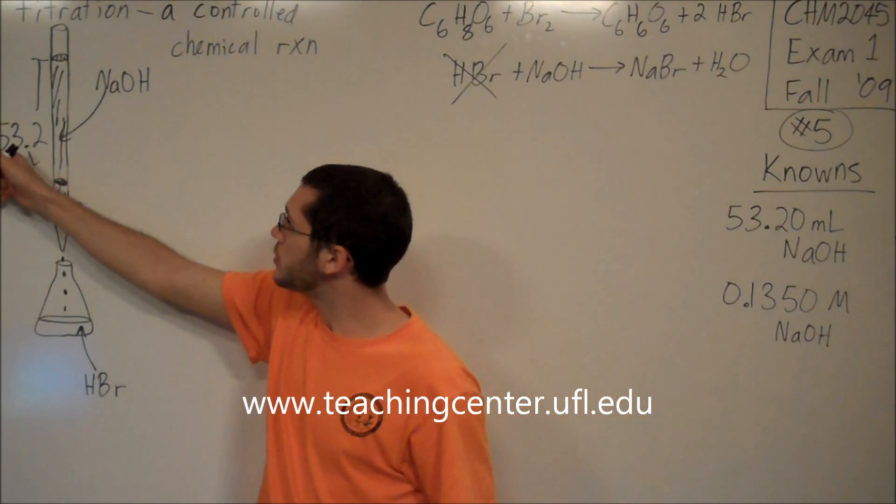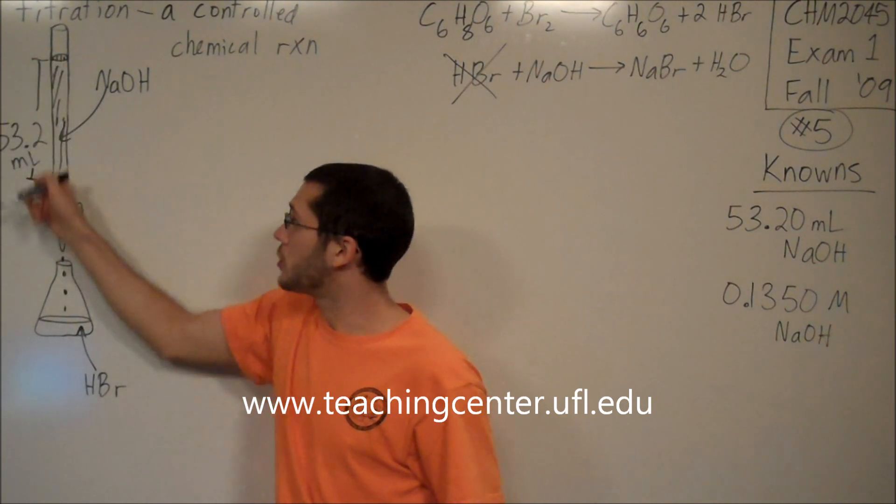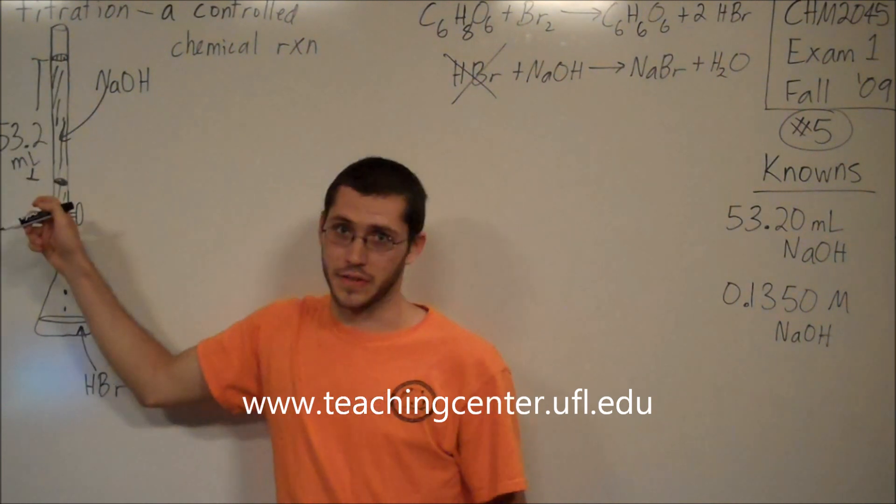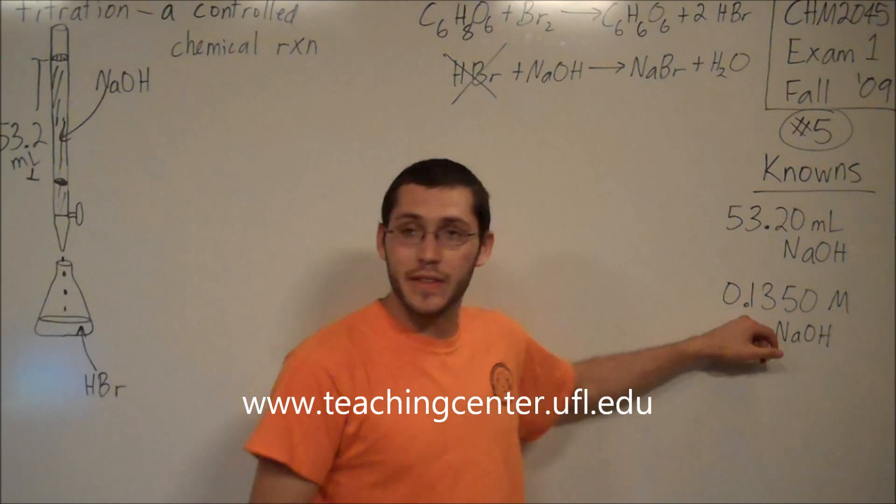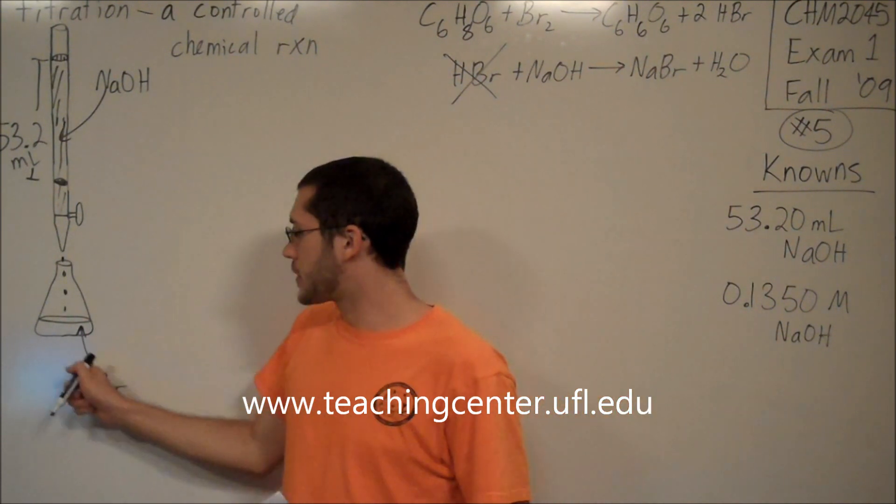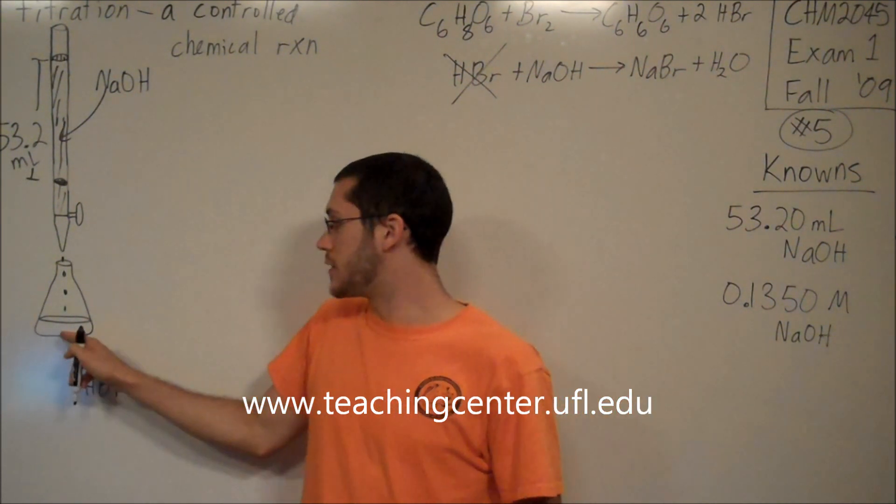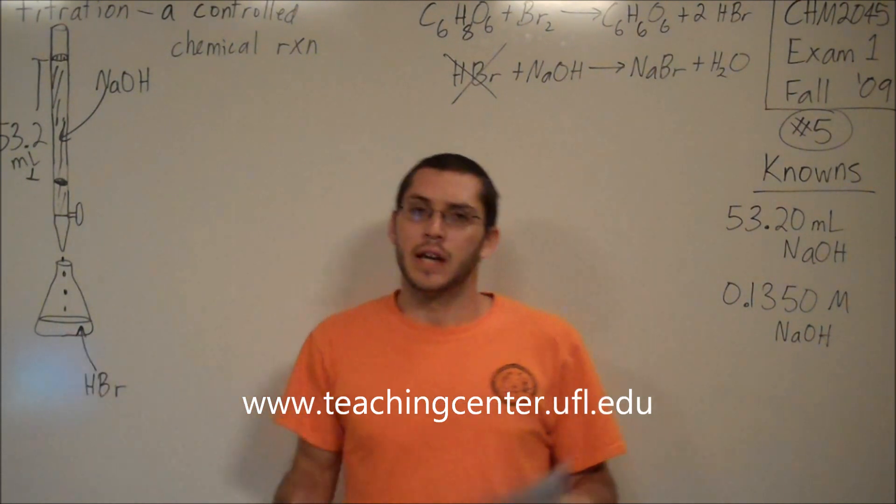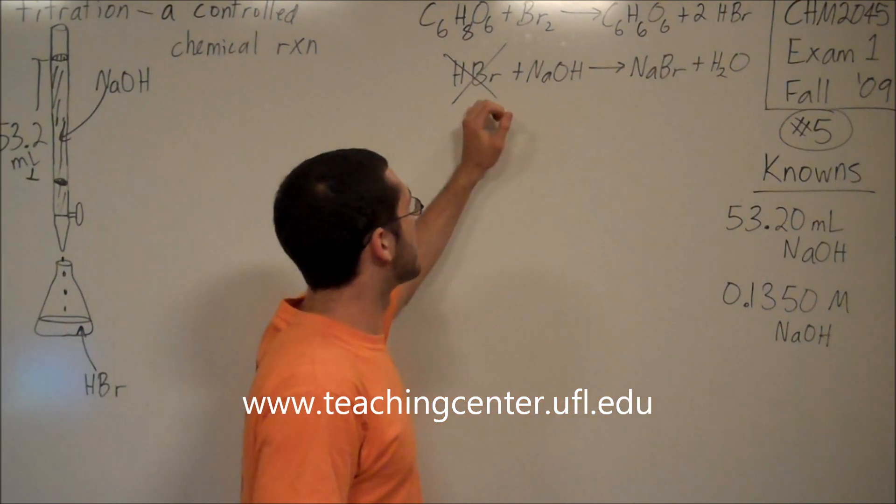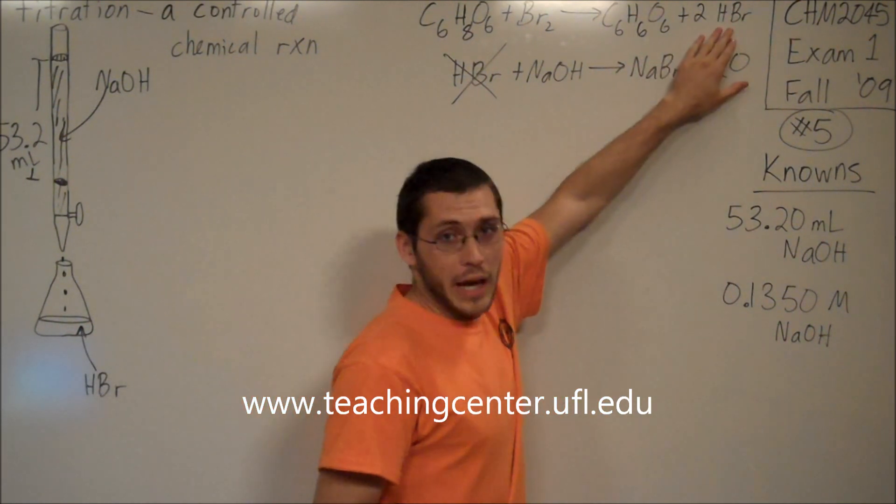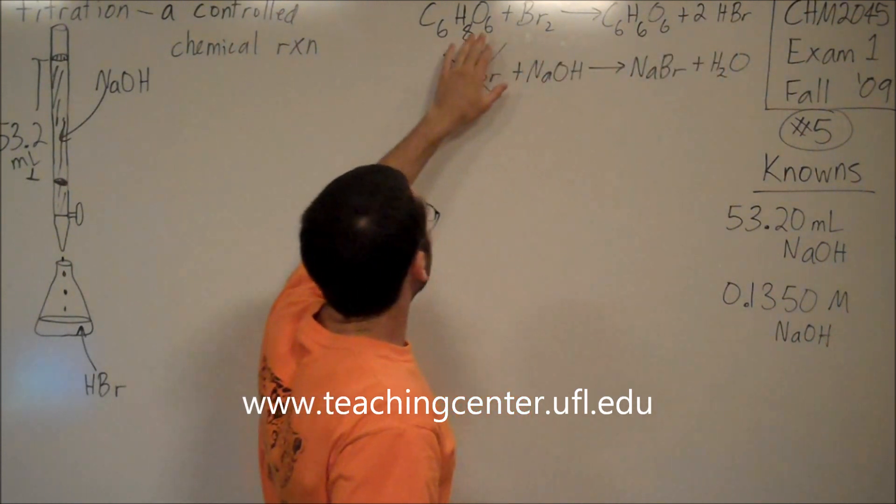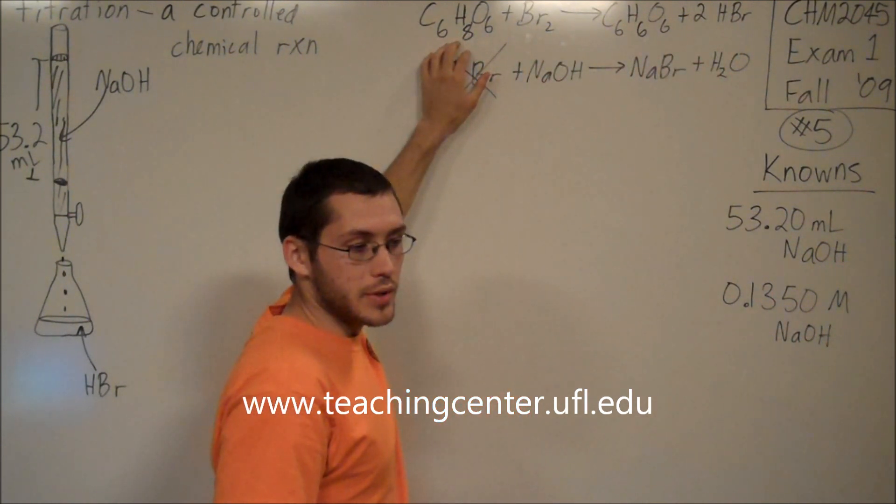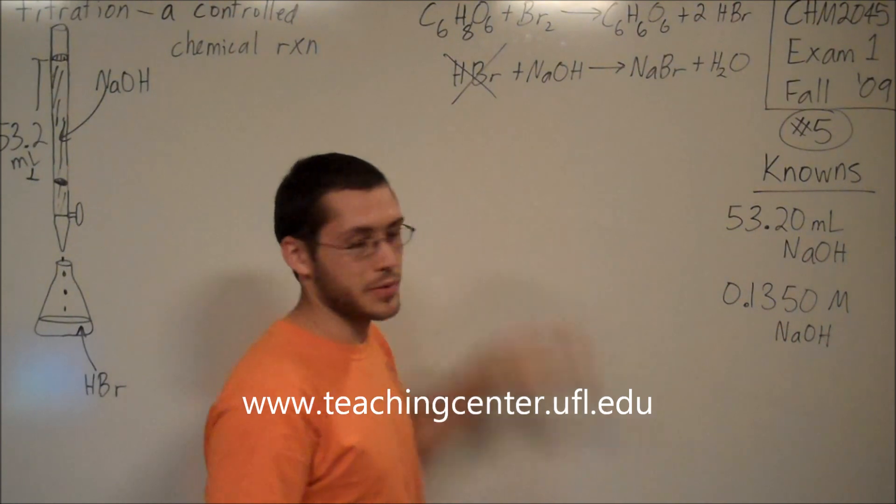Based on the volume of sodium hydroxide that I used, based on how concentrated that sodium hydroxide was, I can figure out how much HBr there was in the Erlenmeyer flask. And then we say, where did that HBr come from? This HBr came from the vitamin C that we started out with. So that's how we're going to approach the problem.